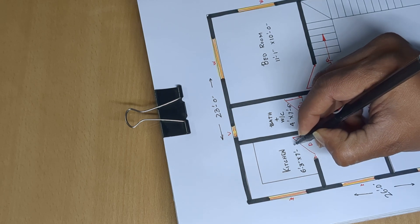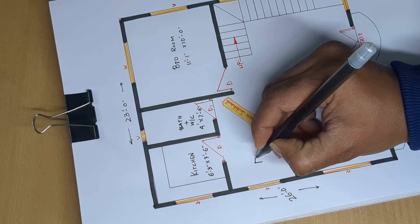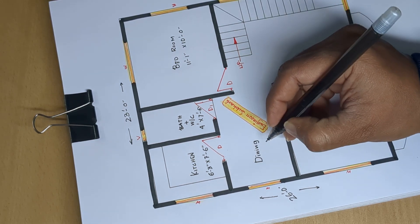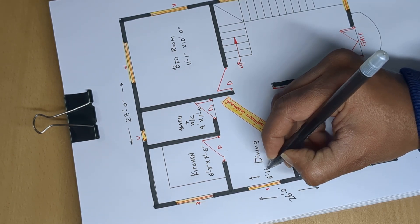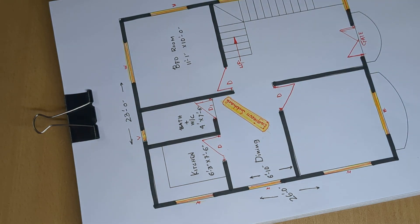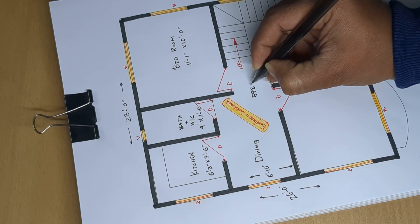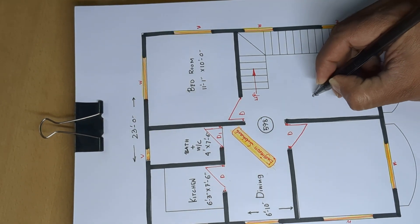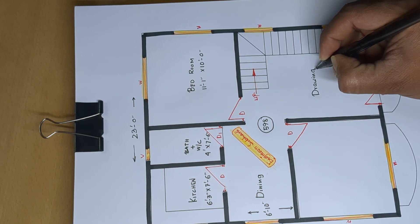Dining room, dining area. Six feet ten inch wide. Total five hundred ninety eight square feet house plan design drawing area.